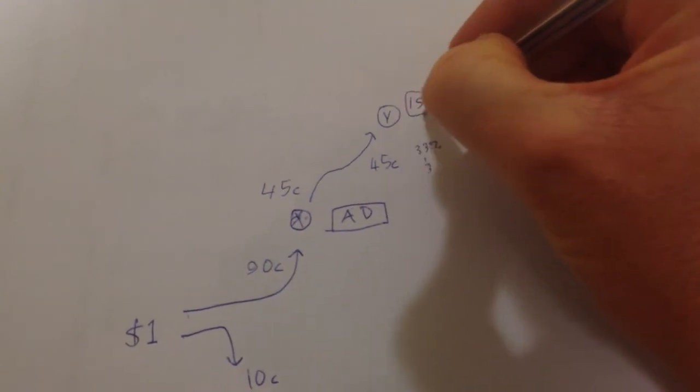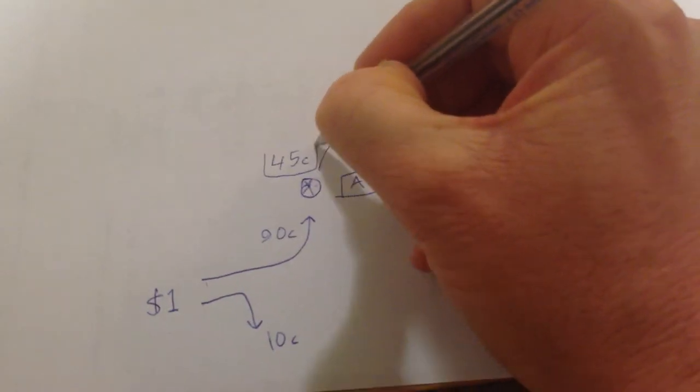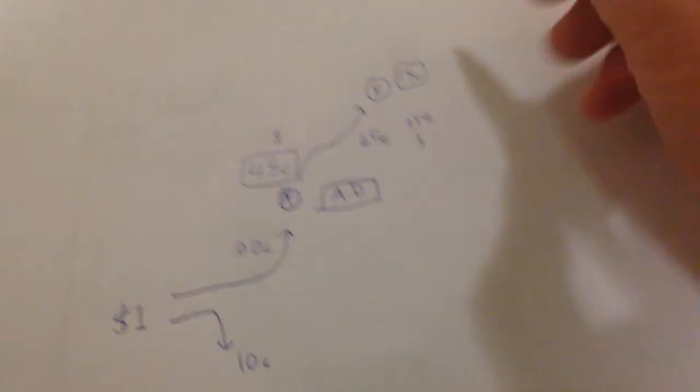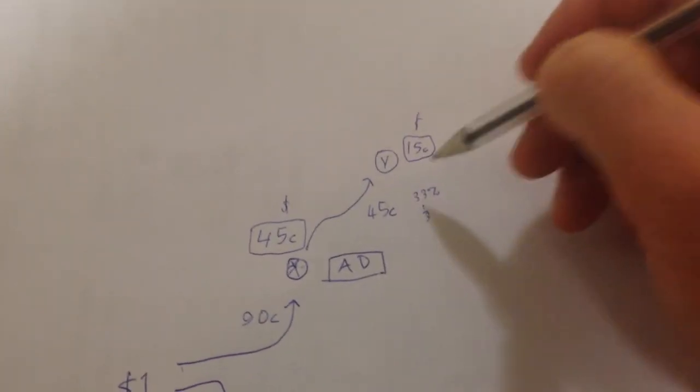Now I'm going to draw a little kind of square around those numbers so you know that that's what they're getting paid. And I'll put a little dollar sign next to it. See how much they get paid. Y gets paid $0.15.